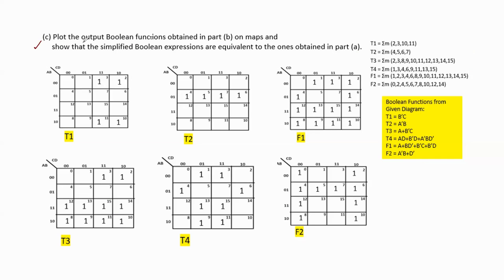Now let us move to part c: plot the output boolean functions obtained in part b on Karnaugh maps and show that the simplified boolean expressions are equivalent to those obtained in part a. Since we have four input variables, we use four-variable K-maps.